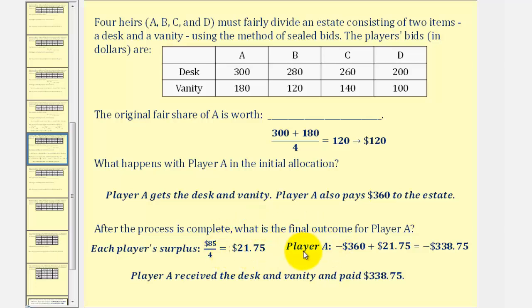This means player A initially paid $360 to the estate, which I'm showing here as a negative value, but then player A receives $21.75 back, and therefore ends up paying $338.25. So the final outcome for player A would be: player A received the desk and the vanity and paid $338.25.